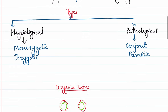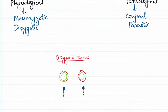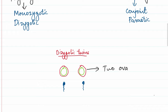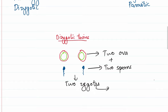Let's start with dizygotic twins. Dizygotic twins occur when two ova are shed. So in one cycle, if the female releases two ova that are simultaneously shed from the ovary and they are fertilized by two sperms, two zygotes will be formed. These two zygotes will then develop into the dizygotic twins. As the name suggests, the twins are developed from two separate zygotes.